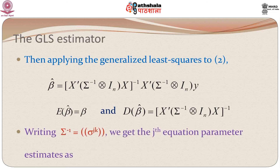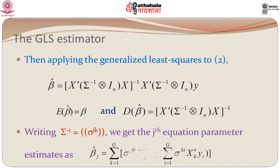Writing Sigma^{-1} with elements sigma^{jk}, we get the j-th equation parameter estimates beta_j_hat as a function involving a summation over k from 1 to g of sigma^{jk} * x_j' * sigma_k times the corresponding summation term. So these are the individual beta estimates for the individual equations, picking up the corresponding elements from the overall beta_hat.